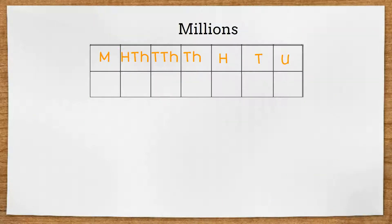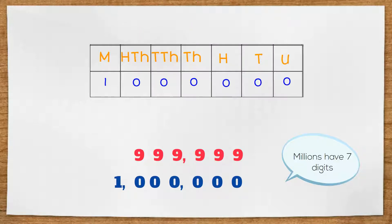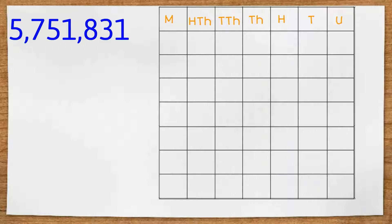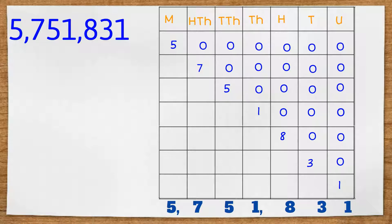The next column on our place value chart is the millions column. Millions have seven digits. We would have counted up to nine hundred and ninety-nine thousand nine hundred and ninety-nine to get to a million. We've got our seven-digit number: five seven five one eight three one. Seven digits means a million, so we'll have five million, seven hundred thousand, fifty thousand, one thousand, eight hundred, three tens and one unit. All together they make five million seven hundred and fifty-one thousand eight hundred and thirty-one.